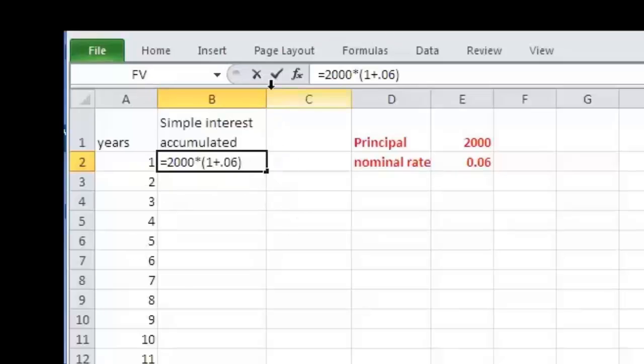When we've entered the formula the way we want it, we can click the check mark there, and Excel will compute it. You can see that the accumulated amount at the end of year one will be $2,120, as we would expect. The original $2,000 and then the interest of $120, which is 6% of $2,000.